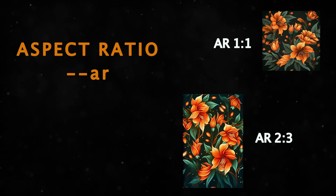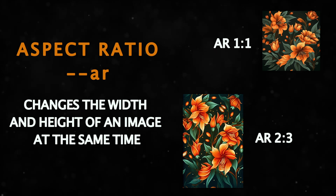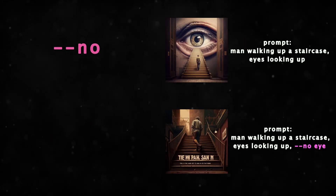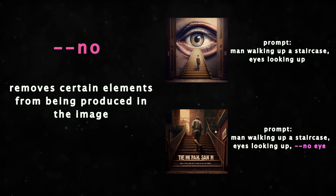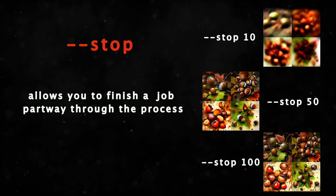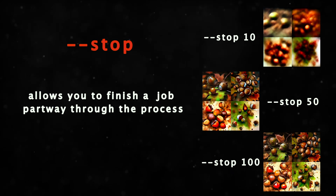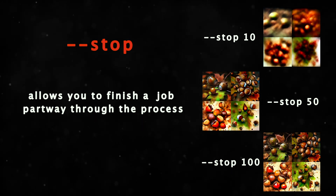Aspect Ratio changes the aspect ratio of a generation — put in two numbers with a colon between them to control the width and the height at the same time. No removes certain elements from being produced in the image. Stop allows you to finish a job partway through the process; stopping a job at an earlier percentage can create blurrier or less detailed results.